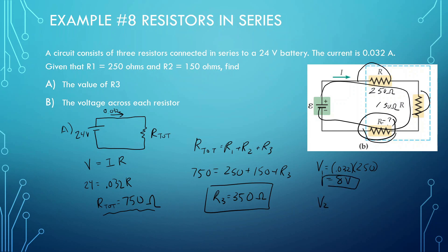V2 has the same current, 0.032, and the resistance is 150. So V2 equals 150 times 0.032, which gives 4.8 volts. At this point, everything should add up to 24. So 8 plus 4.8 is 12.8, which means V3 is going to be 11.2 volts.